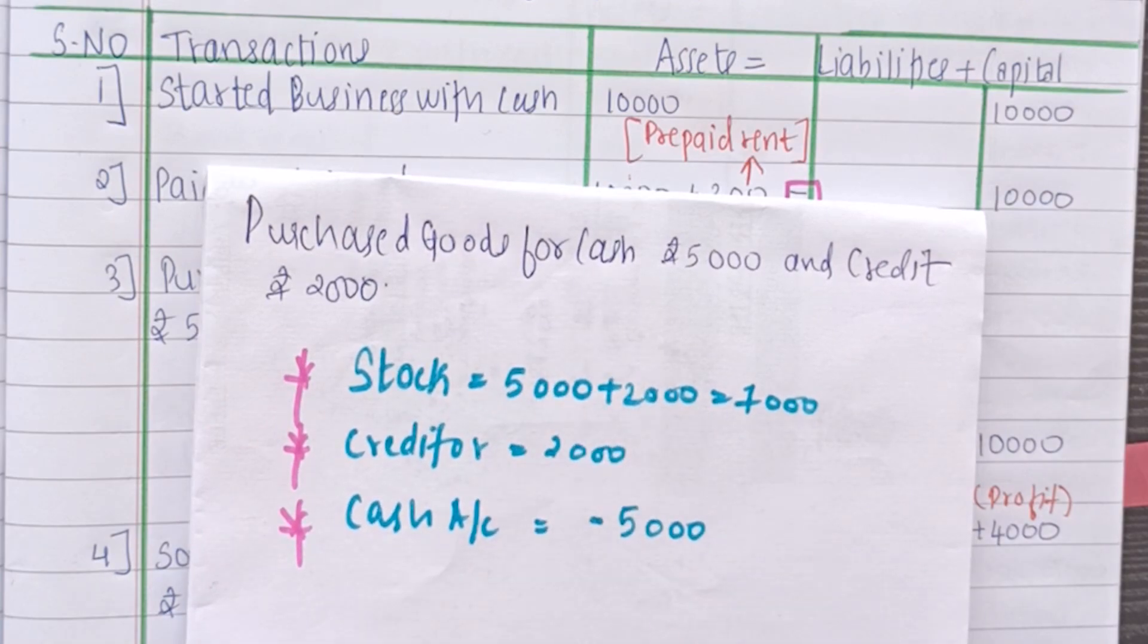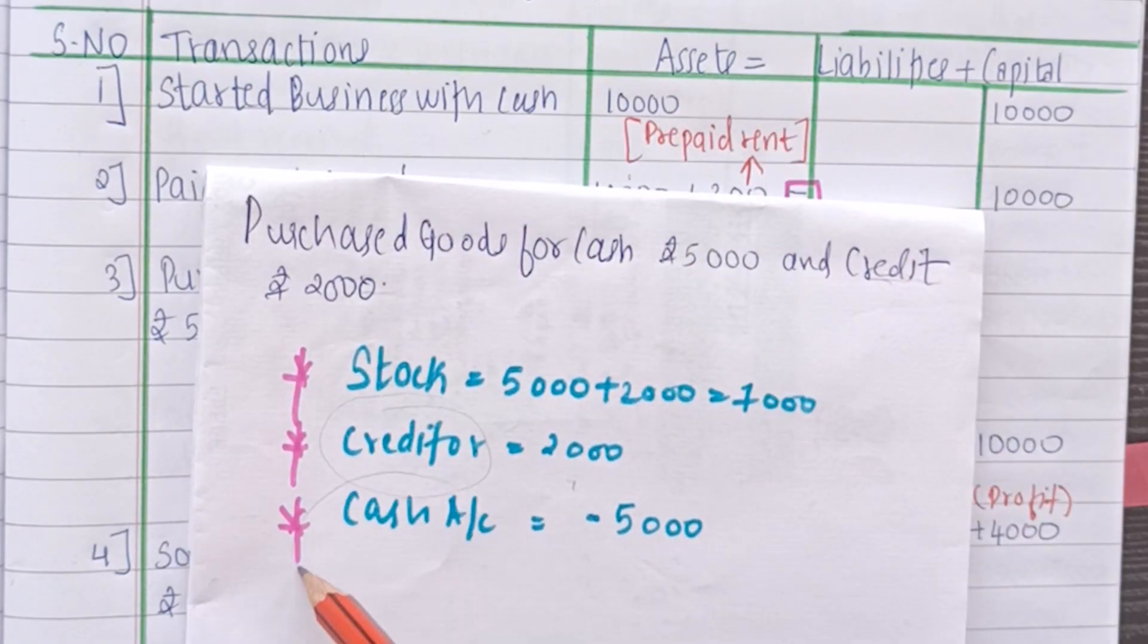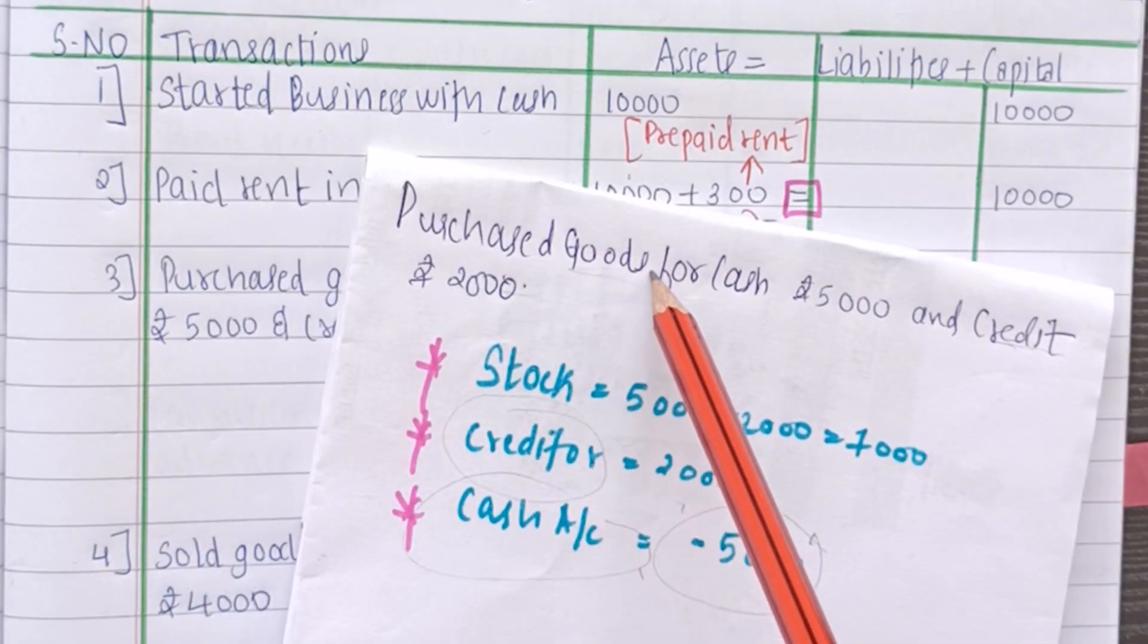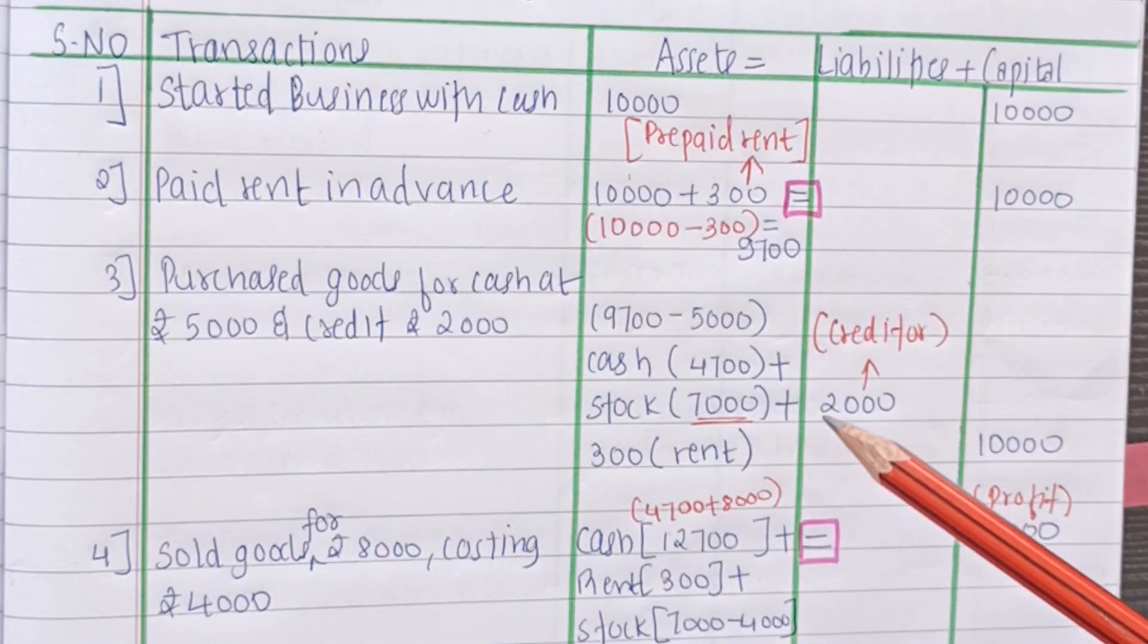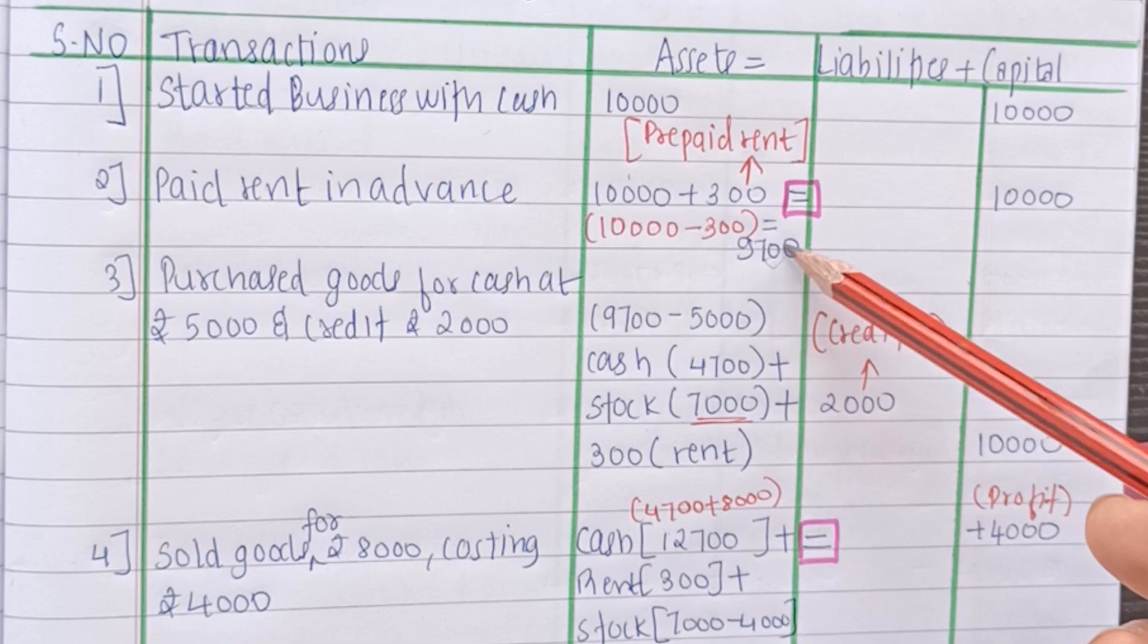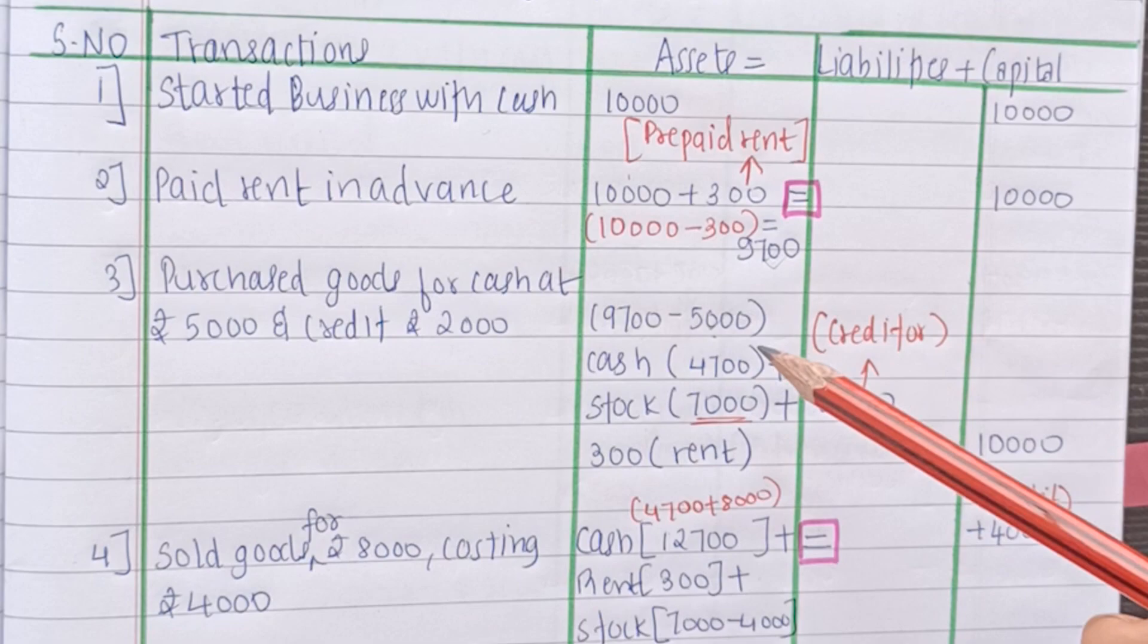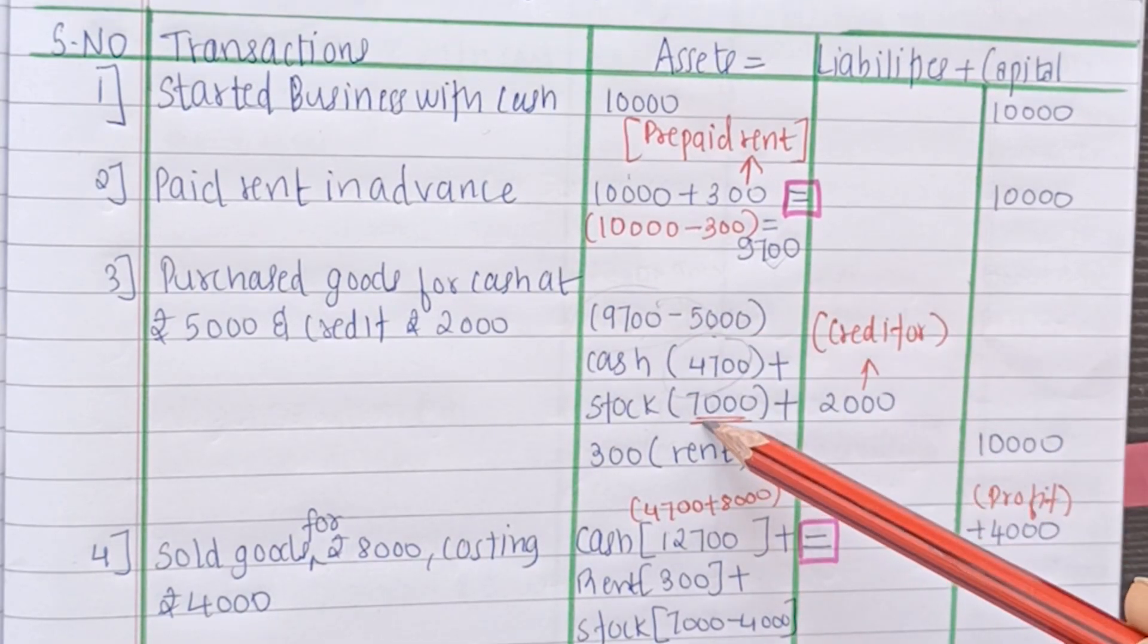So stock will be 7000. Secondly we will have a creditor of Rs.2000. Why? Because we purchased on credit 2000. And the cash account. The cash account will be reduced to 5000. Why? Because we purchased goods for cash 5000. It means we paid for the goods. We paid Rs.5000. So our cash balance will reduce.